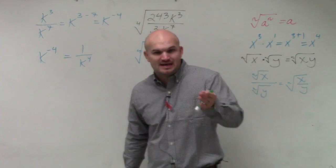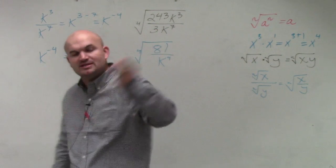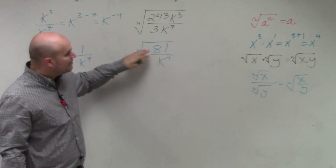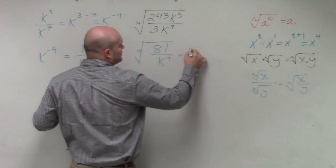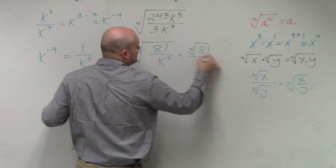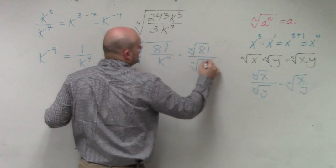I actually don't have to rationalize the denominator. If you remember, we multiplied by 1's with rationalizing the denominator. But in this case, to further simplify this, I can just break this up into the fourth root of 81 over the fourth root of k to the fourth.